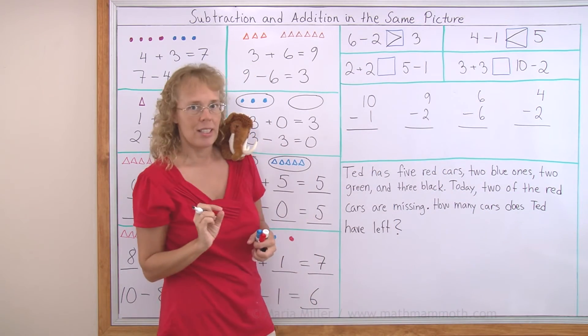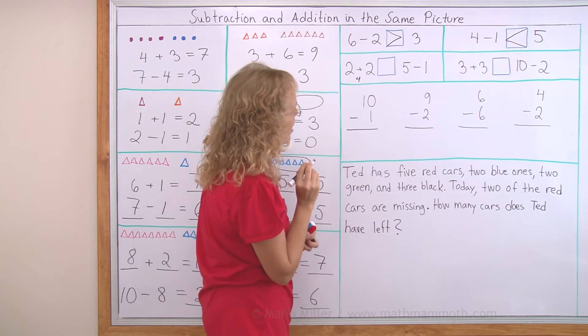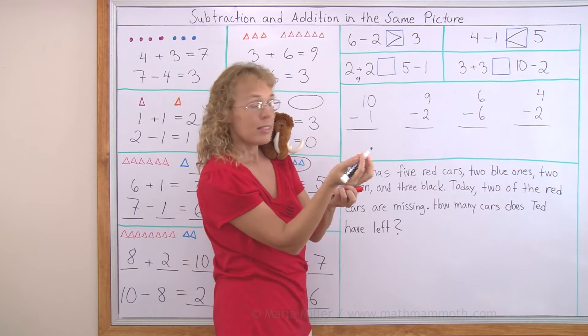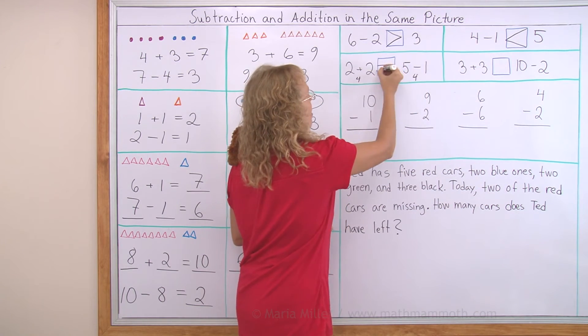2 + 2 on this side. That would be four. I'm going to write it here. And then 5 - 1 is also four. So hey, these are equal.